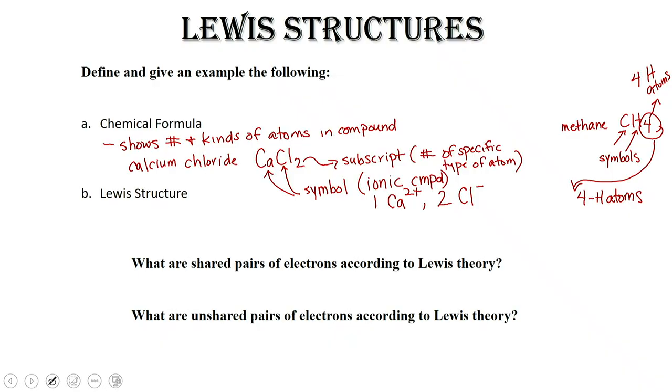So Lewis structures are a way to help us visualize what a compound looks like. Lewis structures show the bonds between atoms as pairs of shared valence electrons.